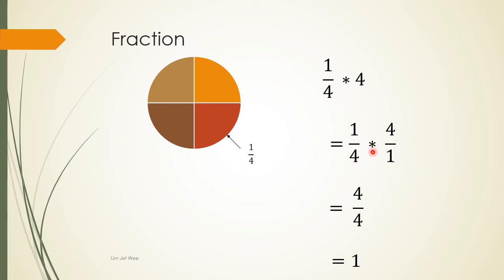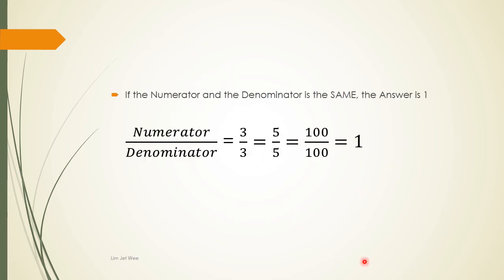So four is four over one, and I still have the multiplication sign with one over four. When you multiply fractions, you multiply the top with the top — numerator times numerator — and the bottom with the bottom — denominator times denominator. One multiplied by four gives four on top, and four multiplied by one gives four on the bottom. So what I have is four over four, and any number over itself is actually one.